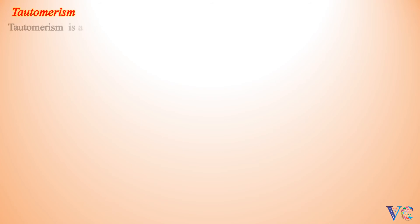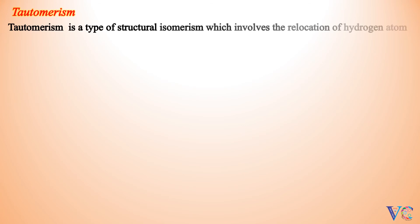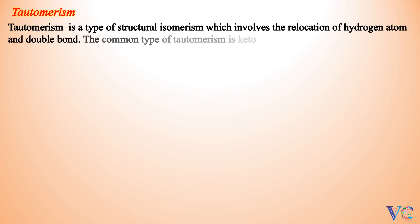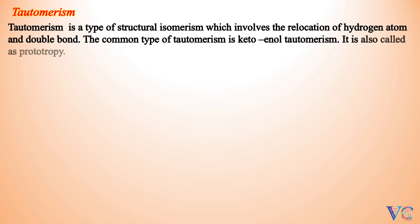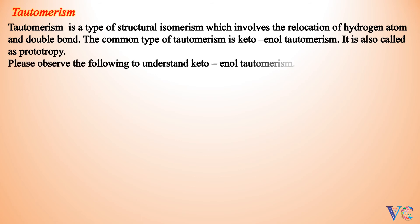Tautomerism is a type of structural isomerism which involves the relocation of a hydrogen atom and a double bond. The common type of tautomerism is Keto-Enol Tautomerism, also called Prototropy. Please observe the following to understand Keto-Enol Tautomerism.